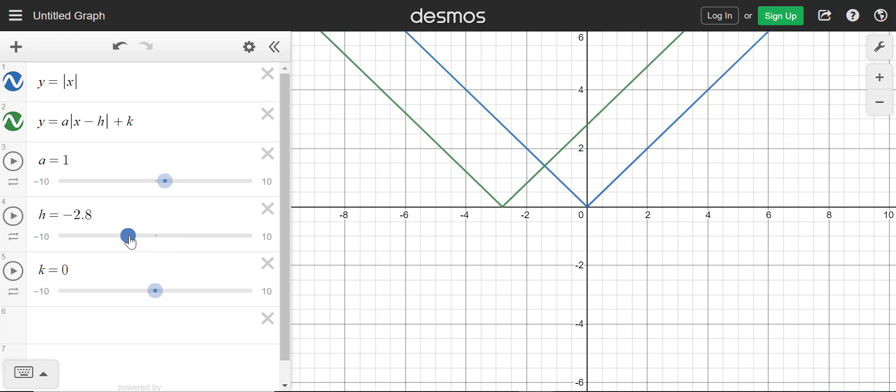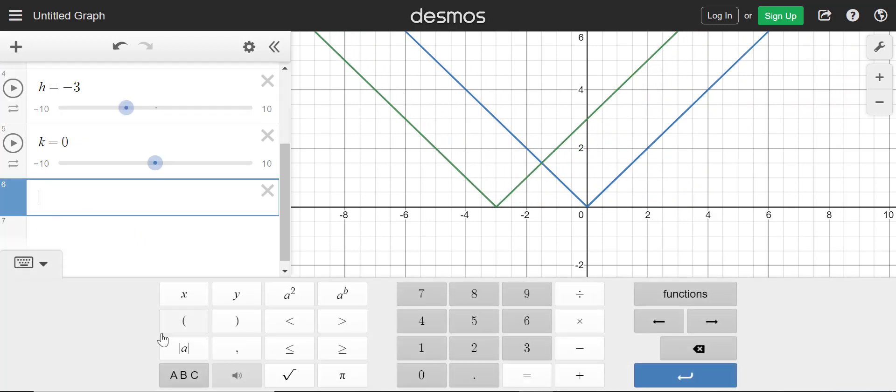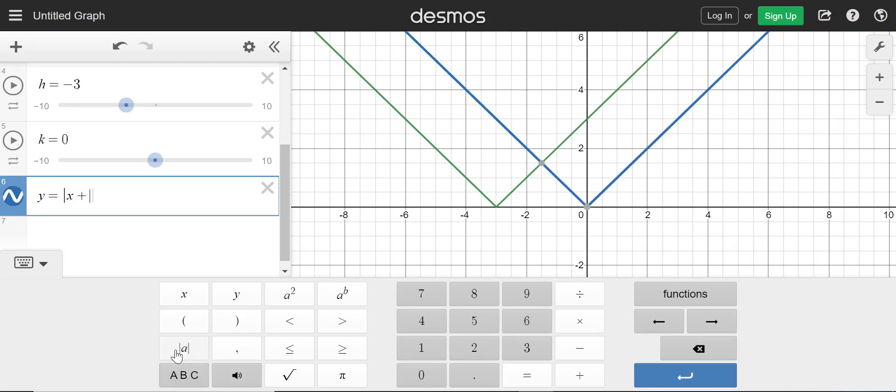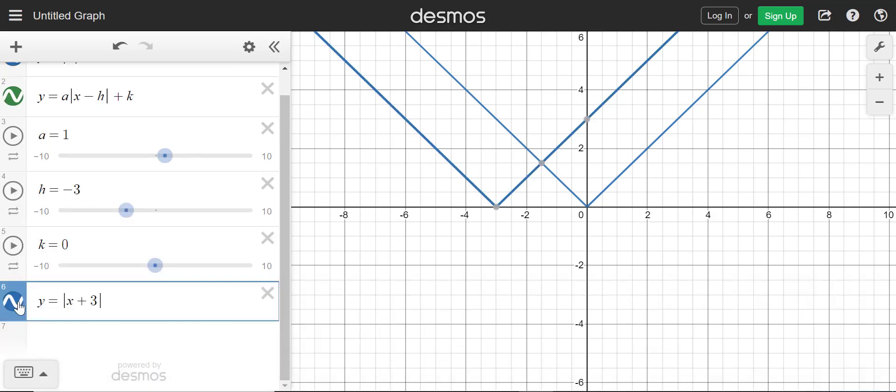If I make h negative, it moves it to the left. That's the same as if I would have y equals absolute value of x plus 3. So you can see, that's exactly the same. So if I have a plus inside the absolute value, it's going to move it to the left.